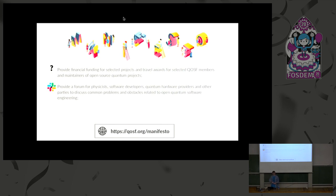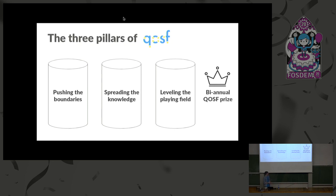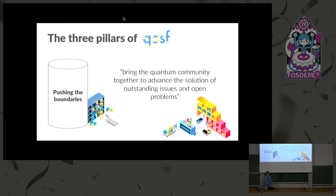The Slack channel we're currently building up is supposed to be a point where you can connect with people working on quantum projects, quantum physicists, or people excited about helping out on existing projects. In terms of future missions and goals we've defined three pillars: pushing the boundaries, spreading the knowledge, leveling the playing field, and a biannual QOSF prize. Pushing the boundaries is about bringing together the quantum community and advancing the solution of outstanding issues and problems — basically maintaining a list of open, uncracked problems in the quantum computing software space so that young researchers can come to the list, get inspired, pick up a challenge, and work on it with links and resources compiled by others.